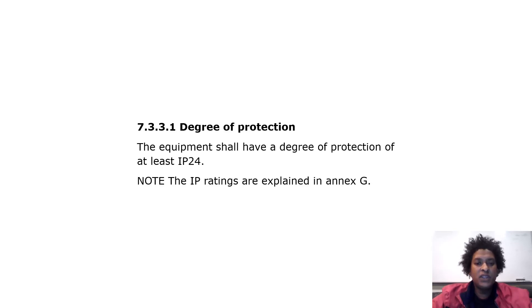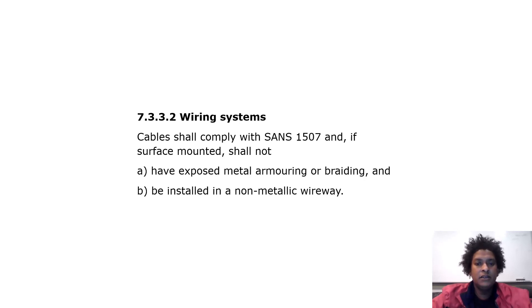Selection and erection of electrical equipment — degree of protection: equipment shall have a degree of protection of at least IP24. Note that IP ratings are explained in an annex. Wiring systems: cable shall comply with SANS 1507, and if surface mounted, it shall not have exposed metal armoring or braiding and shall be installed in a non-metallic wireway.